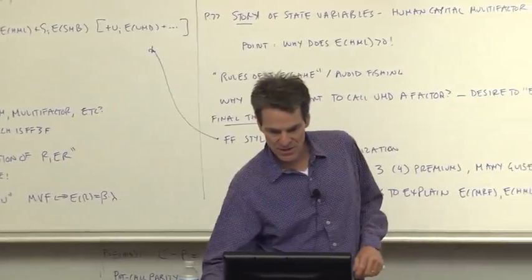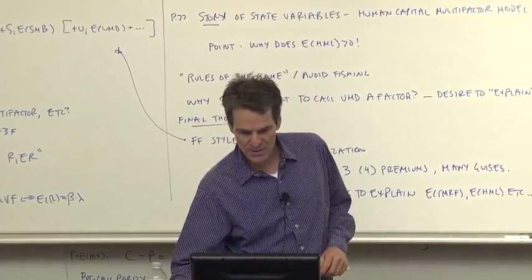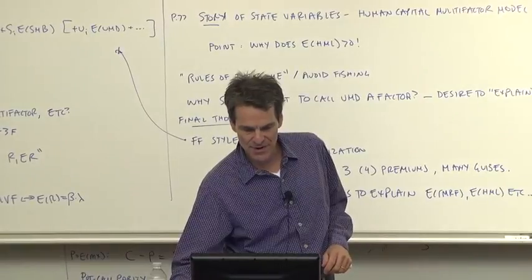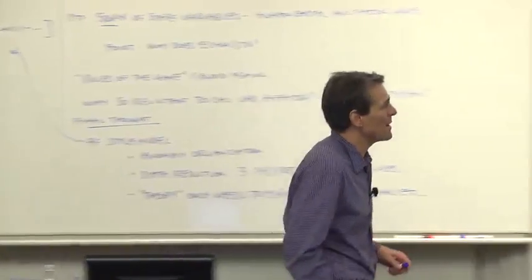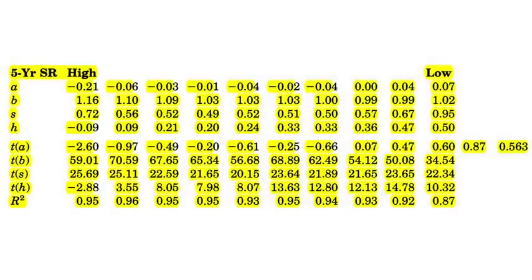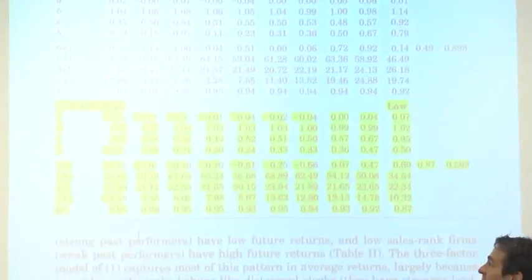So let's look at the Fama-French three-factor model. What happens if we use the three-factor model to explain these average returns? And that's in the next table. That's table three of Fama-French. Remember, expected returns rose from left to right, so we're looking for a pattern of betas that rise from left to right. Once again, market betas don't do anything for us. They're all 1.00.